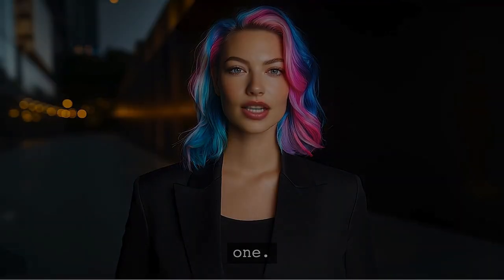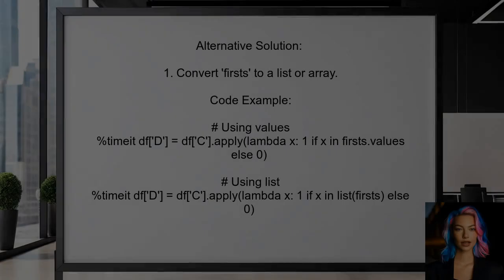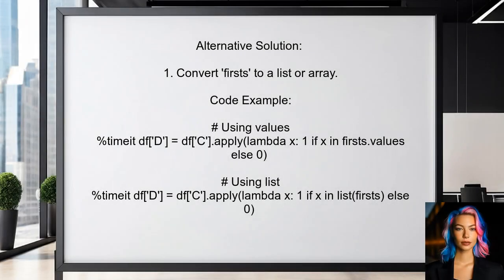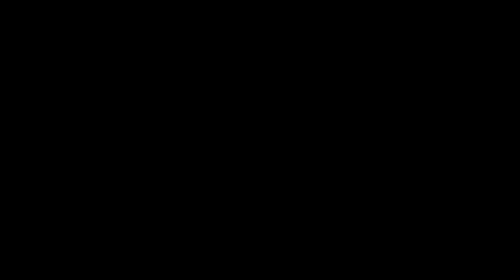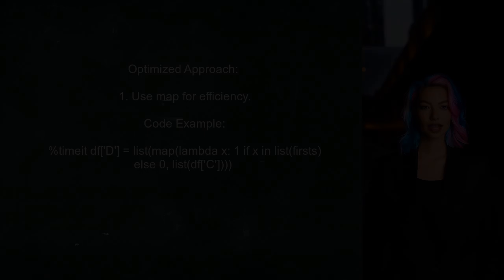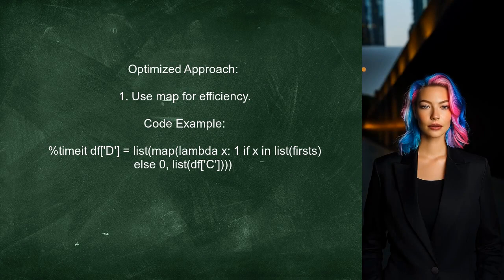Another user suggests that the issue arises because first is a pandas Series. When using IN to check for values, it searches the index instead of the values. To fix this, they recommend converting first to a list or an array. They also provide a more efficient method using the map function, which significantly reduces execution time.